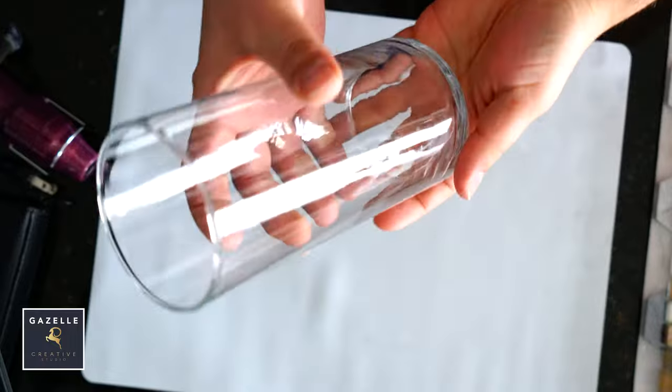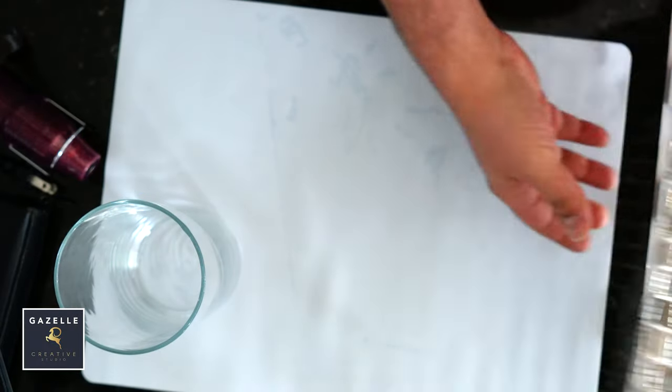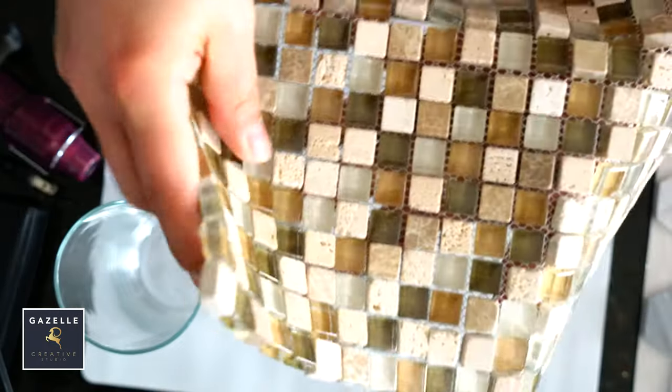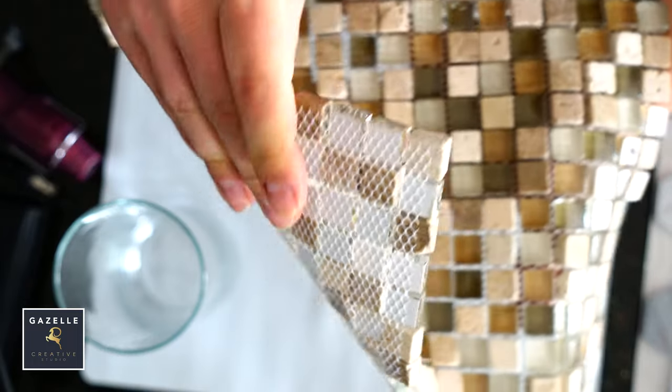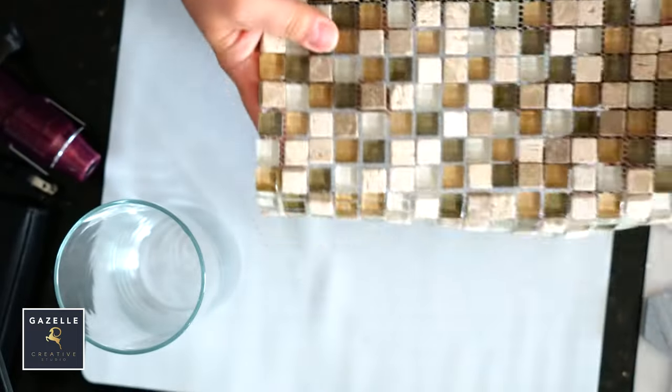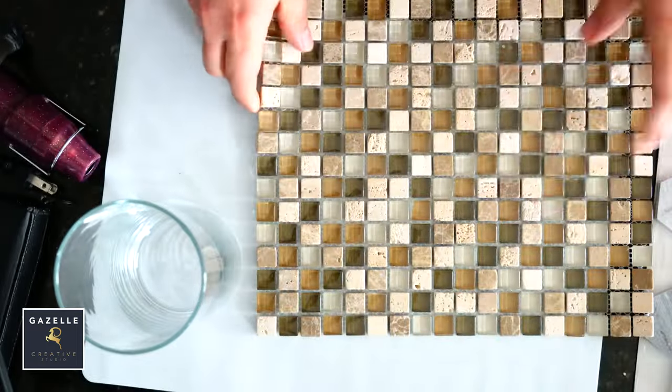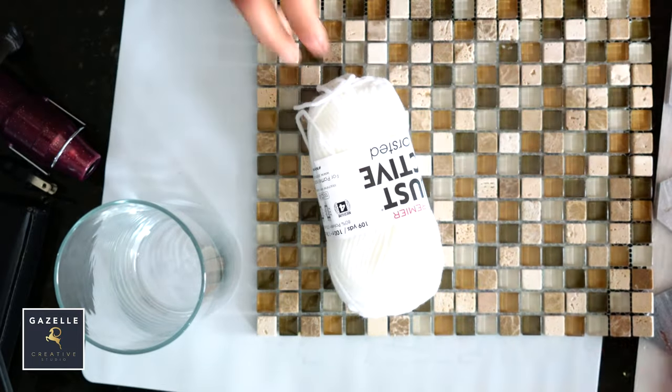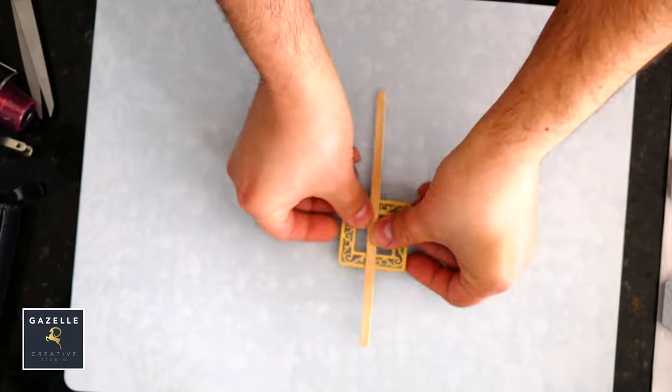For the second DIY we will need a hurricane vase from Dollar Tree and some tiles. This came from Habitat for Humanity ReStore. Some yarn also from Dollar Tree. These items are optional: wooden pieces and faux leather to make a belt.